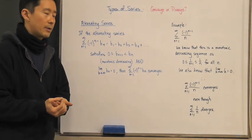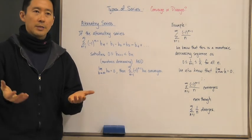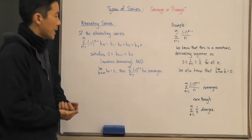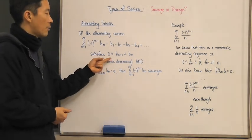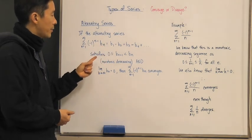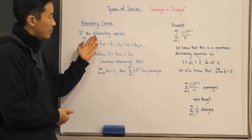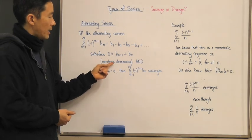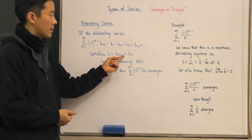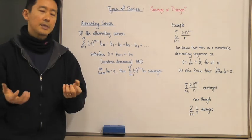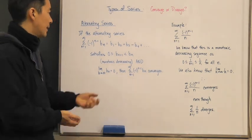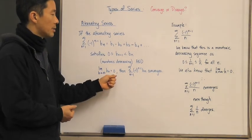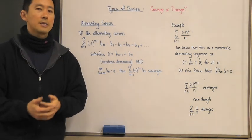There are important things to recognize about an alternating series — we are both subtracting and adding values. If we disregard the alternating part and look at just the sequence of values, then if we know that 0 ≤ b_(n+1) < b_n, meaning it's a monotonic decreasing sequence, and the limit as n approaches infinity of b_n equals zero, then the alternating series converges.